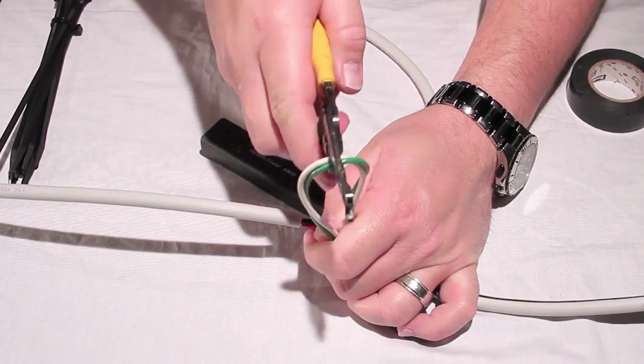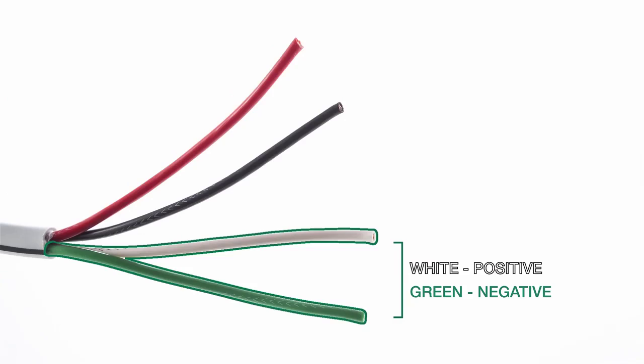Repeat these steps for the left channel using the white and green wires. Remember, the white wire will be connected with the red wire coming from the satellite since they are both positive leads.